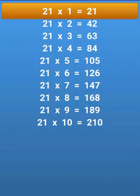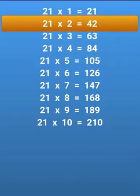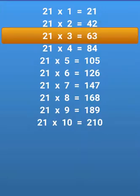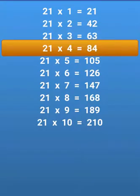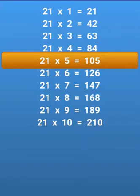21 times 1 equals 21, 21 times 2 equals 42, 21 times 3 equals 63, 21 times 4 equals 84, 21 times 5 equals 105.